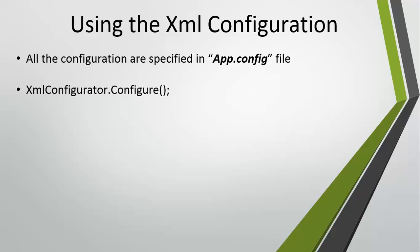Hello everyone, welcome again. In our previous video we saw how we can configure log4net from the code. In this video we are going to discuss the XML configuration part — that is, we are going to provide the same configuration but this time we will specify it inside the application configuration file, that is the app.config file.